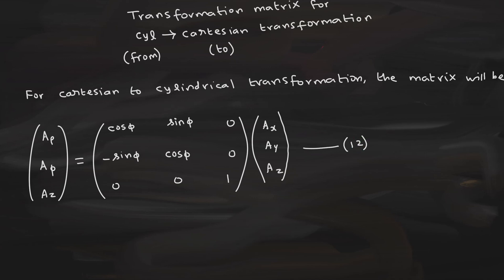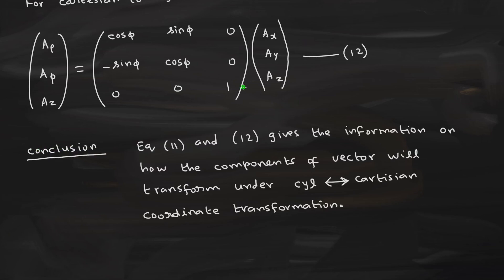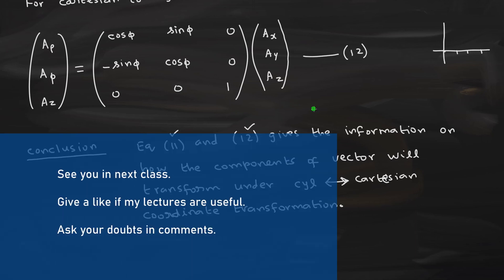The aim of today's class was to find out how the components of a vector will transform — and we got the answer. Equations 11 and 12 give the information on how the components of a vector transform under cylindrical-to-Cartesian and vice versa coordinate transformation. We have seen the relation between Cartesian and cylindrical polar systems, the relation between unit vectors, and how components transform. We will do one or two numerical examples in the next class.